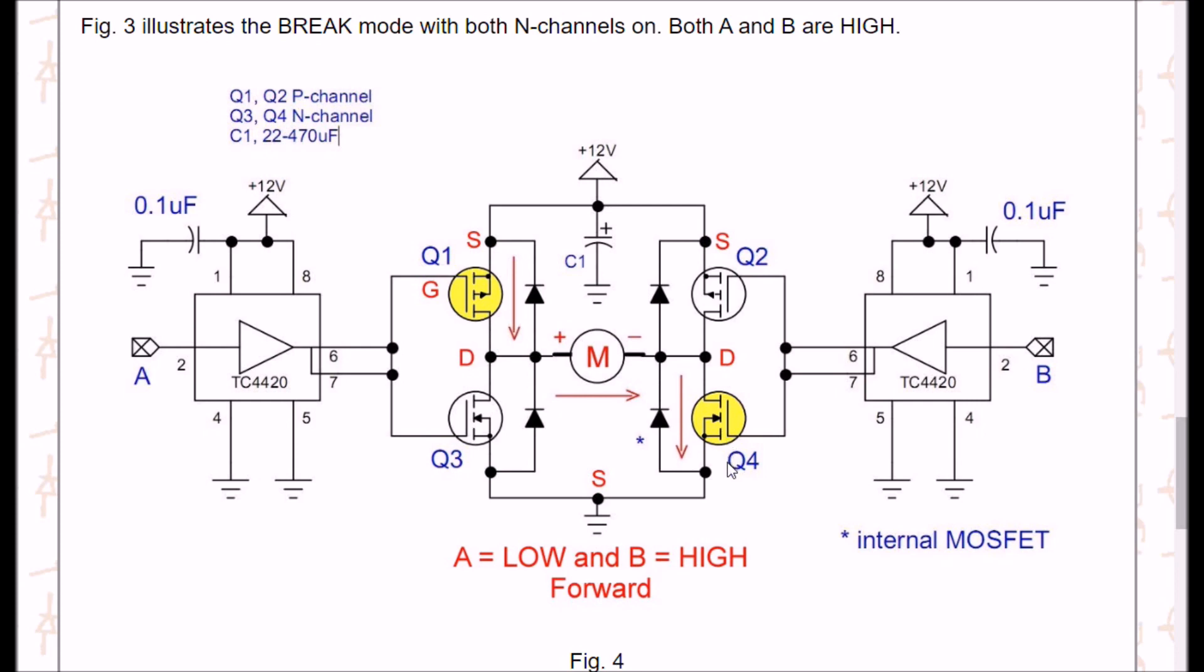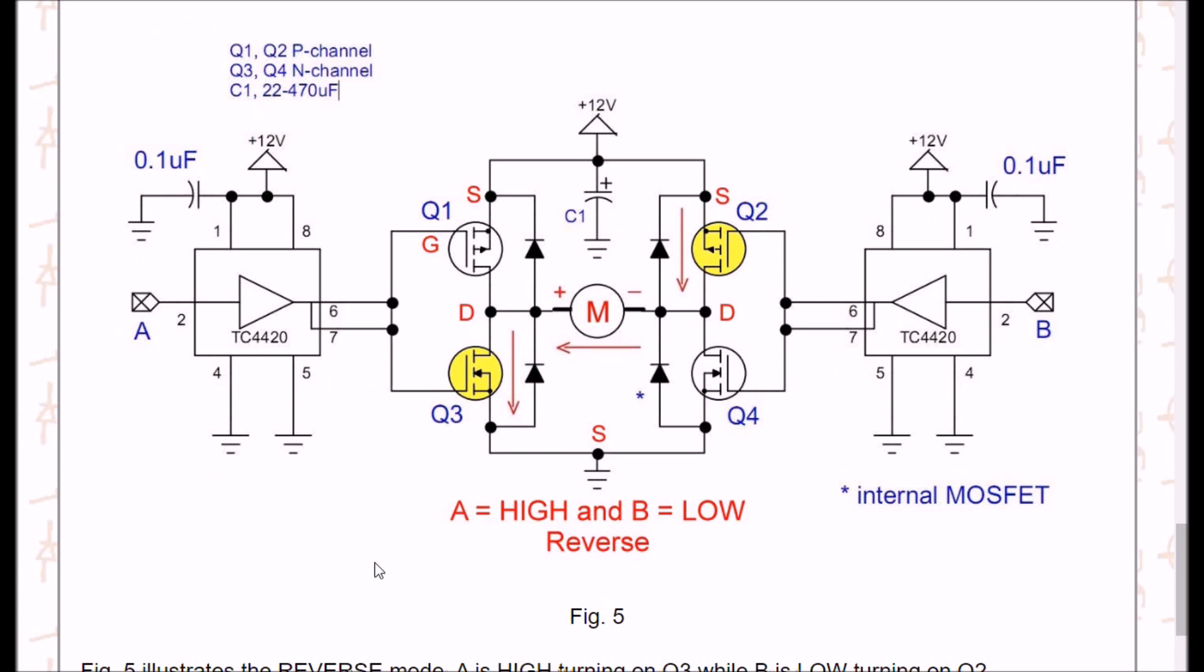So, we establish a current path through Q1, through the motor, to ground through Q4. This is known as, I guess we'll call it the forward. We'll call it forward.